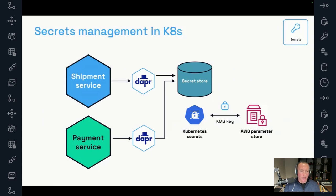On secrets management — managing sensitive information such as API keys, database credentials, and external service secrets was a significant challenge for us. We initially relied on environment variables and manual processes for rotation and security. With Dapr, we centralized our secret management by integrating with the Kubernetes secret store. Dapr's secret API enhanced security and reduced operational risk by ensuring secrets can be securely accessed by all services. Additionally, we transitioned from manually passing a secrets YAML file to storing our secrets in AWS Parameter Store and encrypting them with a KMS key. We then use an open source project called External Secrets to synchronize production secrets to the production Kubernetes cluster and development secrets to the development cluster.